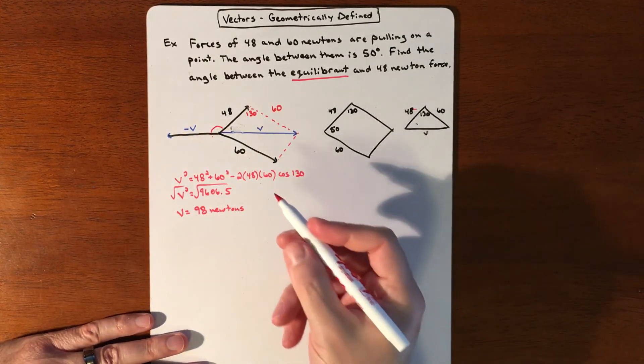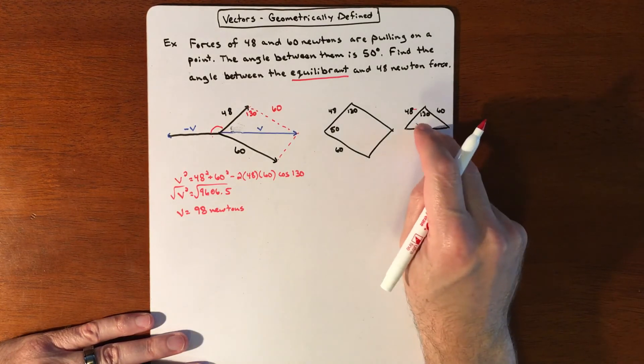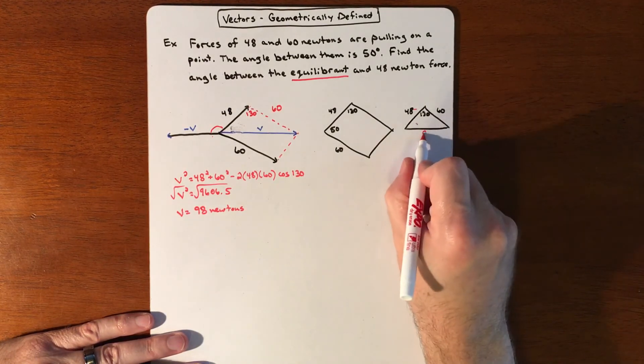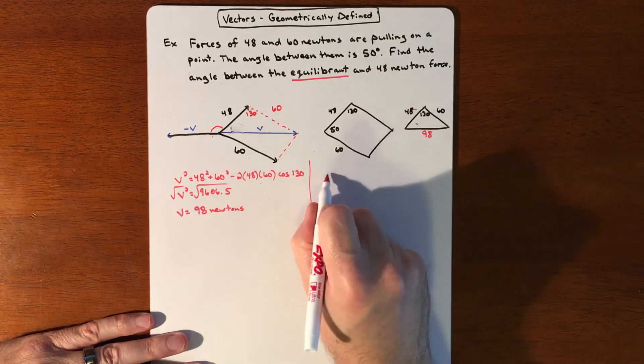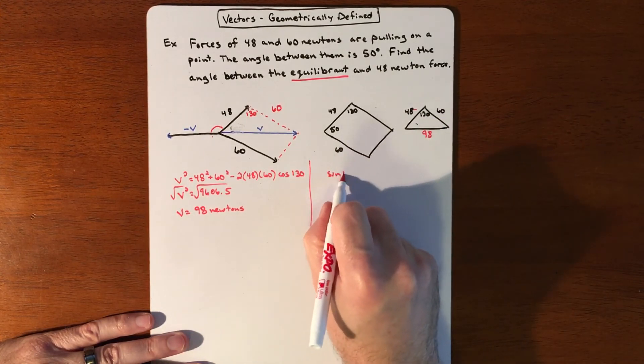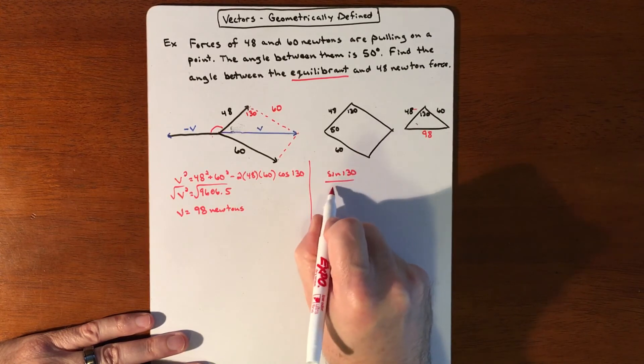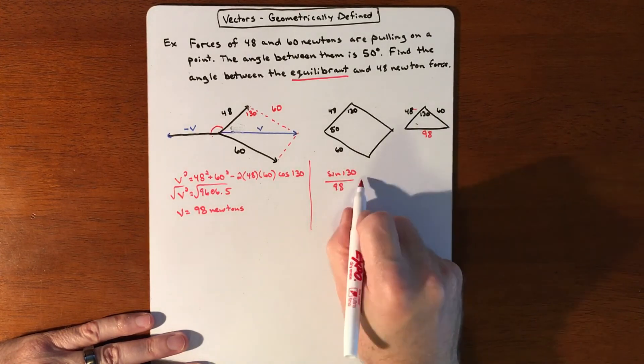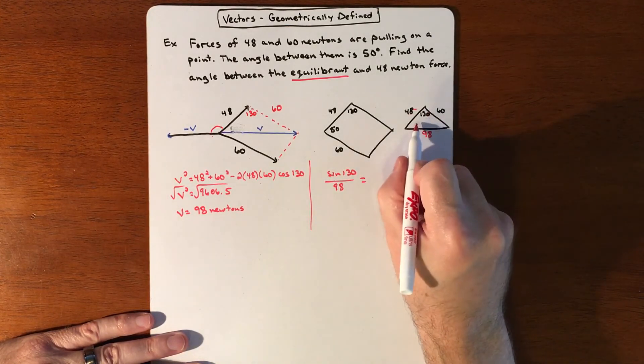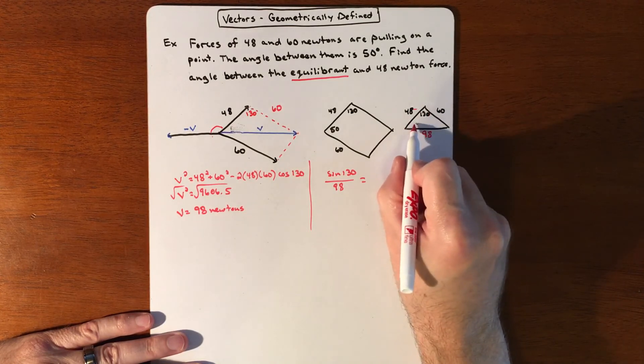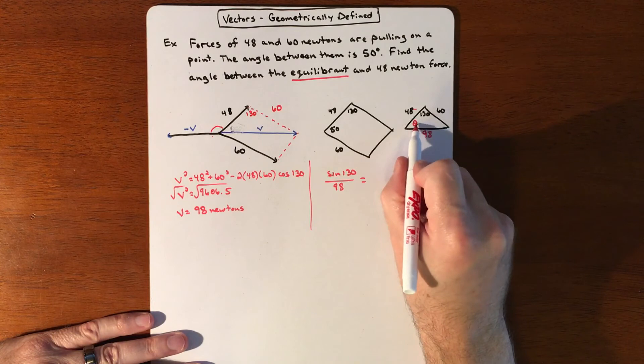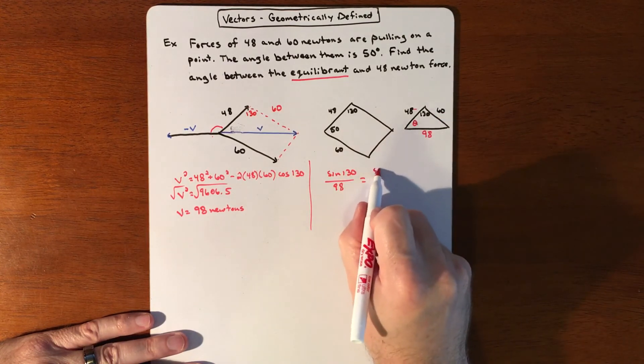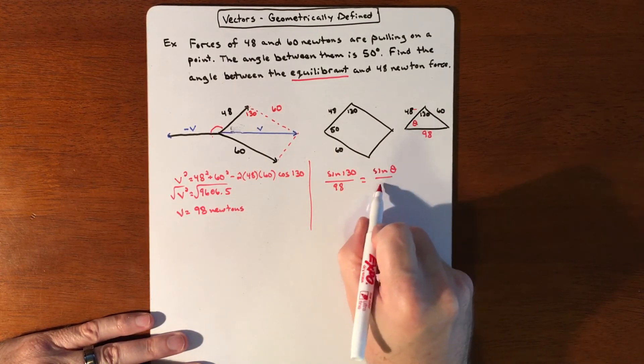Now the angle in between them is, we could now replace that with 98 and then I can do law of sines from here. So I would be doing sine of 130 over 98 is going to equal, I don't know, we can call this theta I suppose, and that's going to go with 60, so sine of theta over 60.